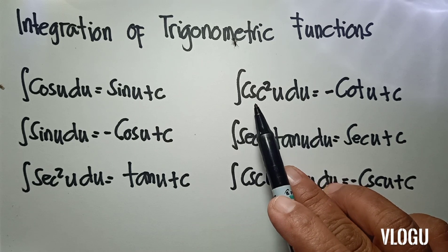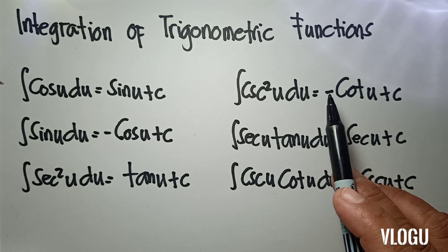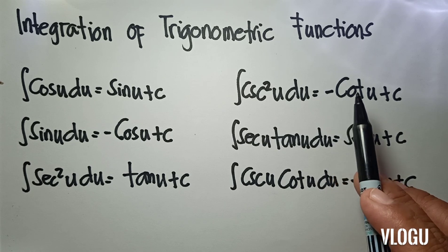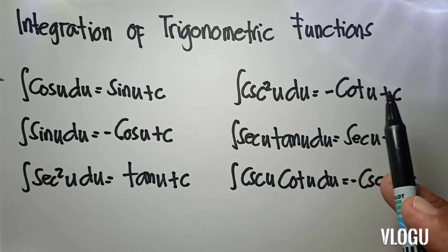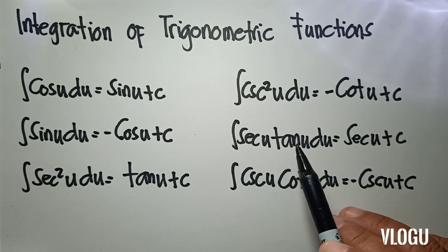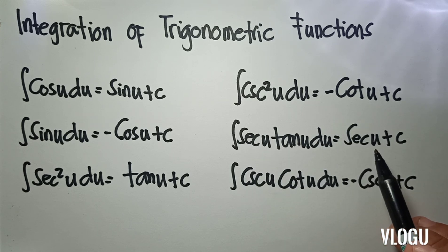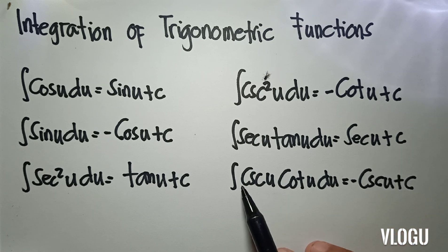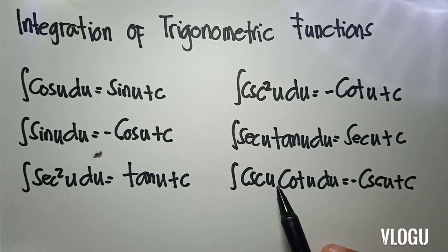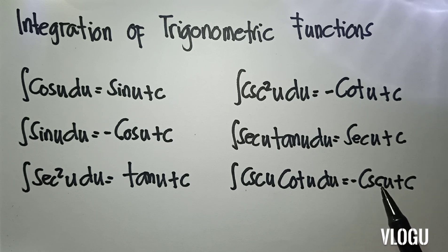The integral of cosecant squared u du is equivalent to negative cotangent u plus c. The integral of secant u tangent u du is equivalent to secant u plus c. The integral of cosecant u cotangent u du is equivalent to negative cosecant u plus c.